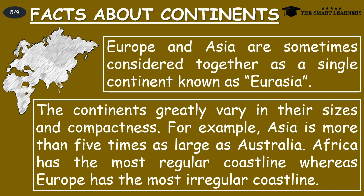Europe and Asia are sometimes considered together as a single continent known as Eurasia. The continents greatly vary in their sizes and compactness. For example, Asia is more than five times as large as Australia. Africa has the most regular coastline, whereas Europe has the most irregular coastline.